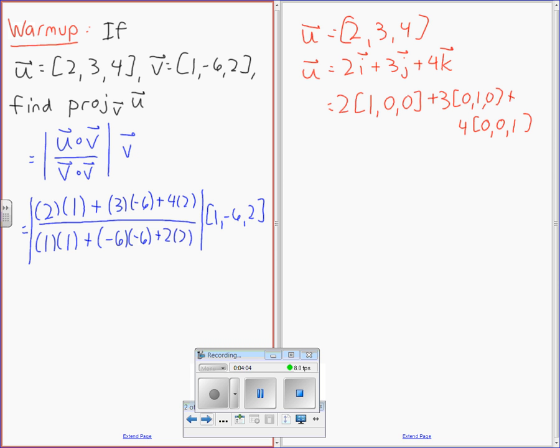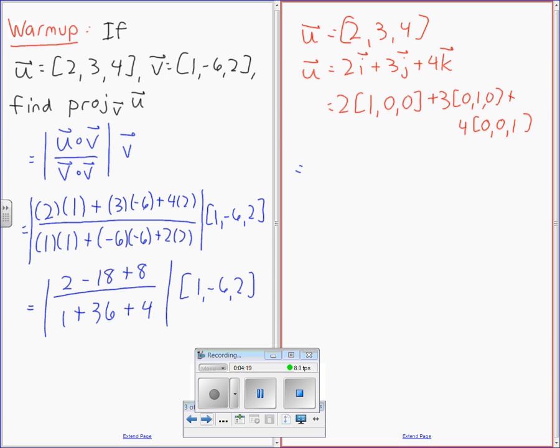Let's do a little bit of multiplication to make sure this works. So that turns into 2 minus 18 plus 8 all over 1 plus 36 plus 4, which equals negative 8 over 41. Times (1,-6,2). So that's going to be -8/41, +48/41, -16/41. There's your vector.